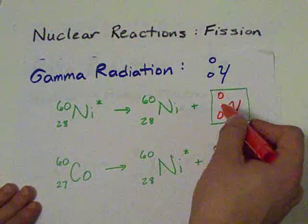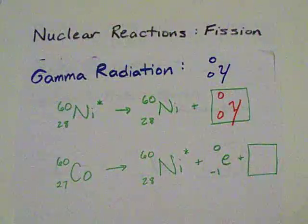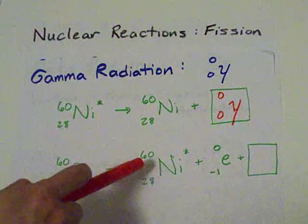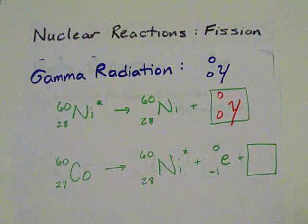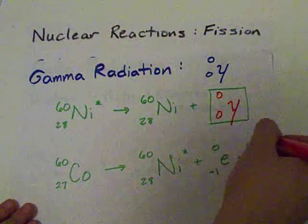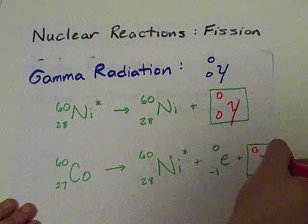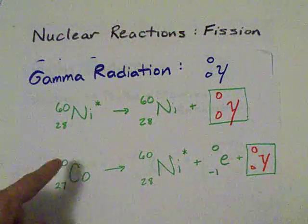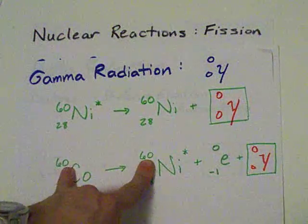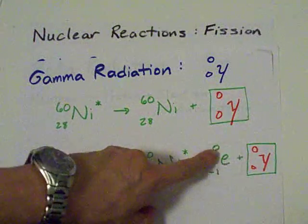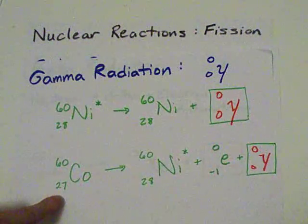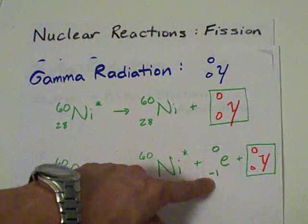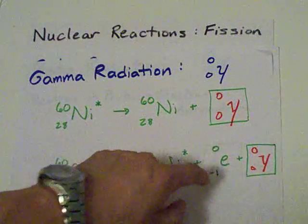This represents that no mass is actually changing. Cobalt 60 actually does this as well. When it decays into nickel 60 and gives off beta radiation, it actually also produces gamma radiation or light when that happens. But again, notice 60 and 60, those equal each other, and there's no change in mass from the particles that were ejected. 27 and 28, well, we did gain a proton. That's why this beta particle is here.